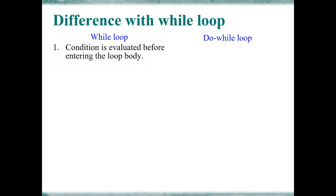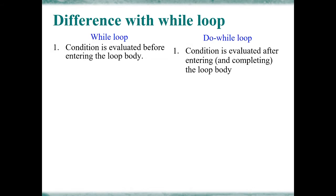The first difference between while loop and do while loop is that in a while loop, the condition is evaluated before entering the loop body. In a do while loop, the condition is evaluated after entering and completing the loop body. This means in a while loop, the condition is checked first and then the statement is executed. In a do while loop, the statement is executed first and then the condition is checked.